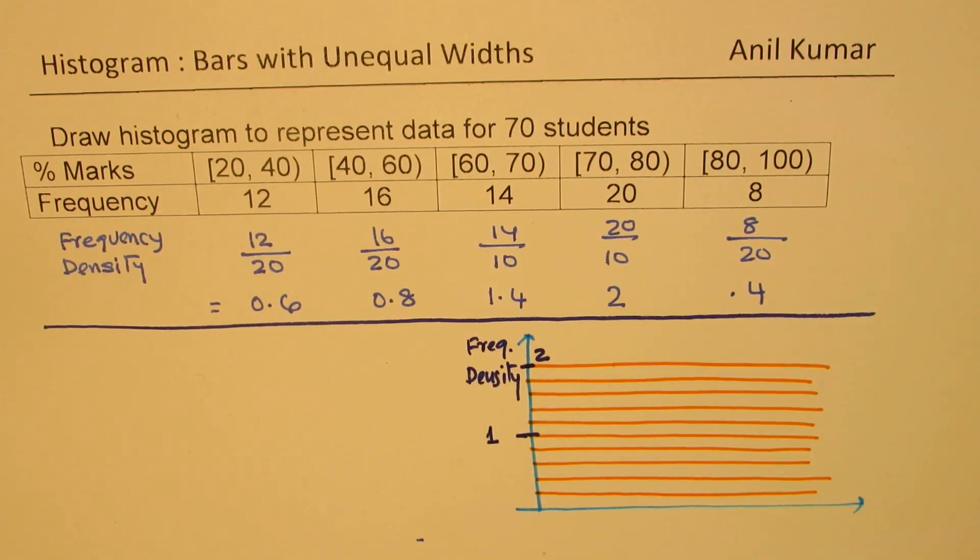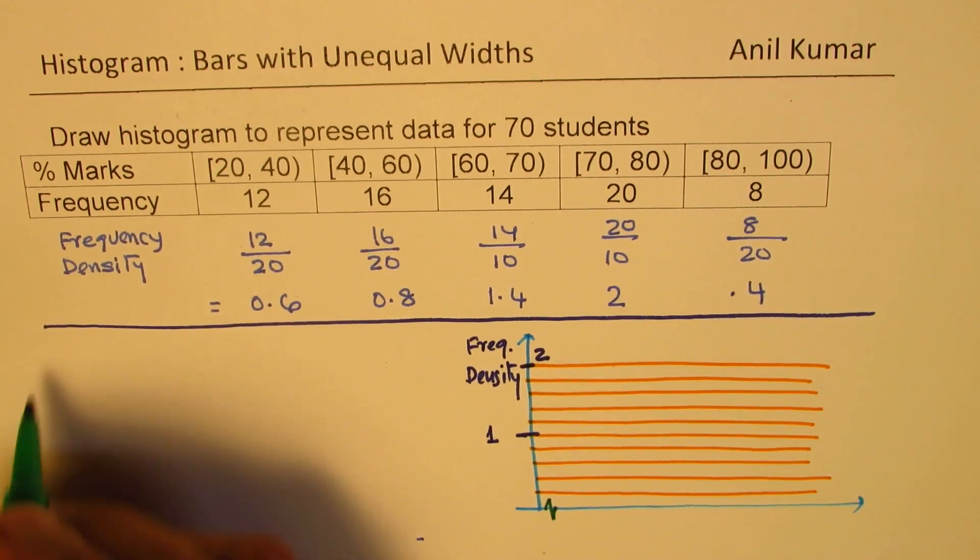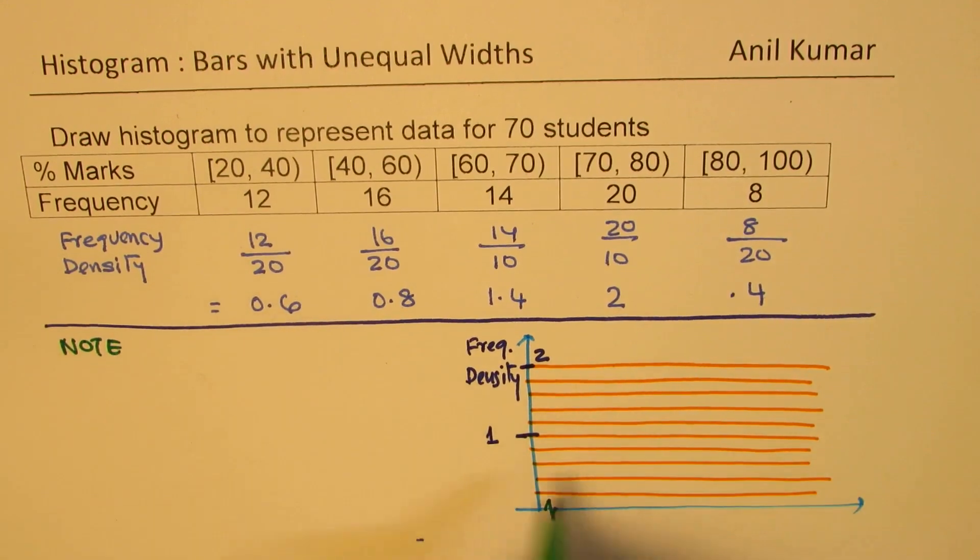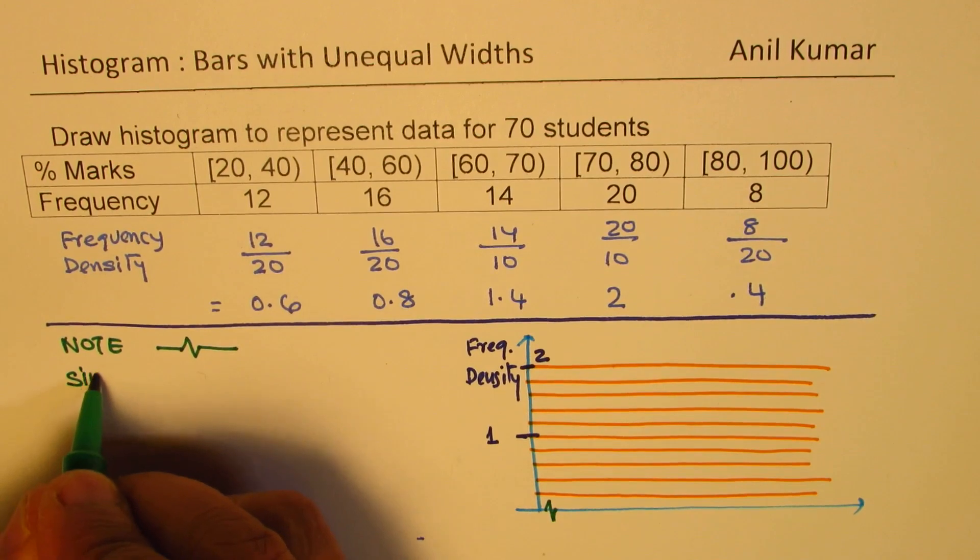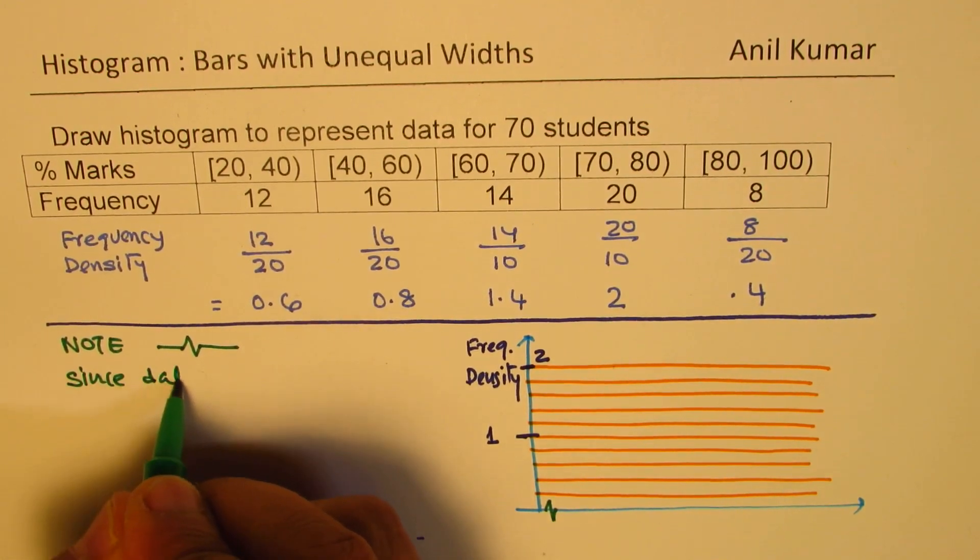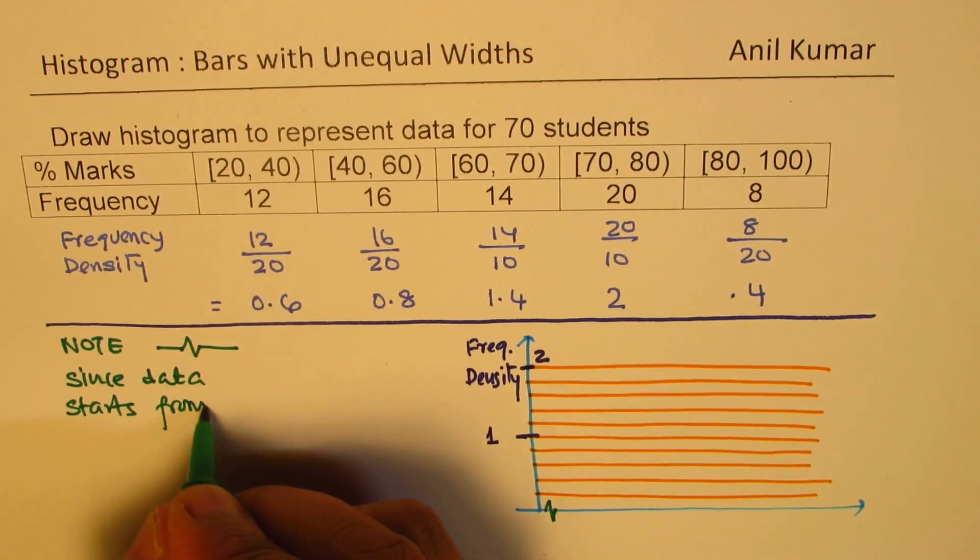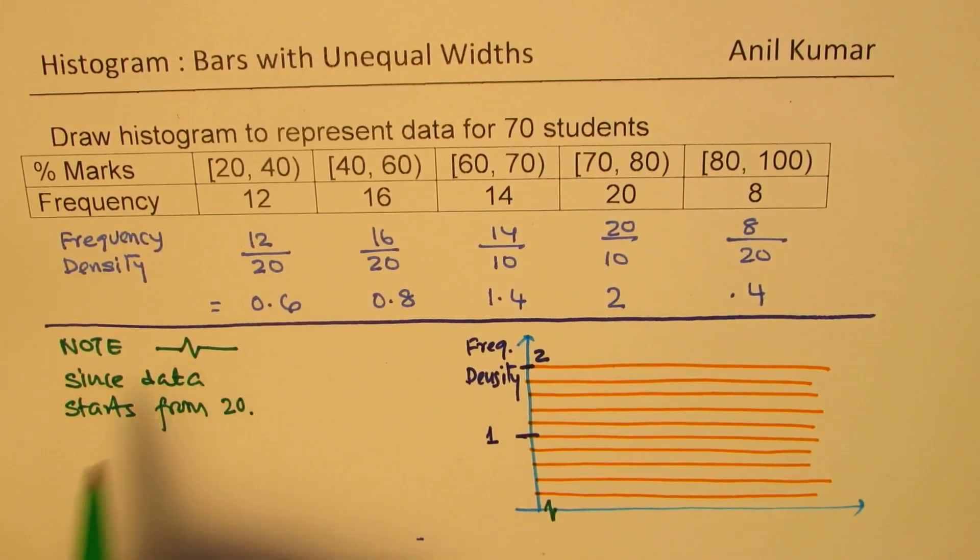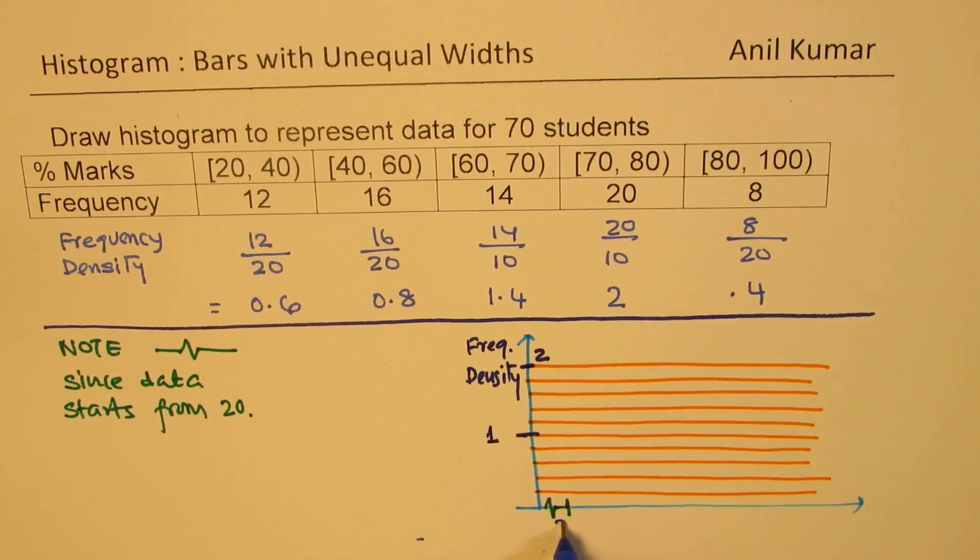The first interval is from 20 to 40. There is nothing from 0. So we use a break in the graph. Note that since data starts from 20, not 0, we use this break. After the break, we'll say this is 20 for us.